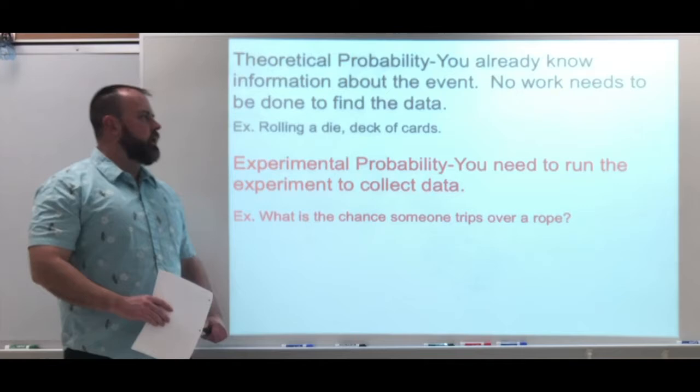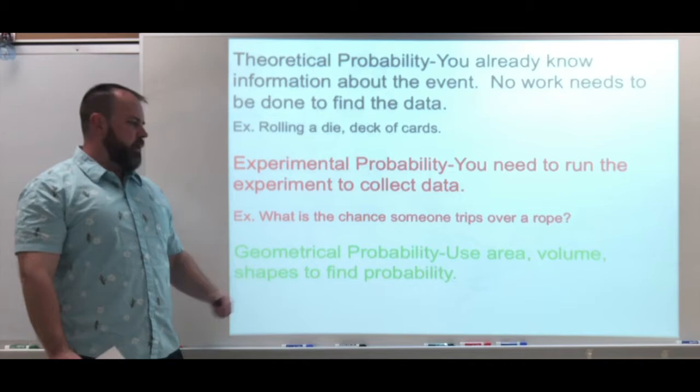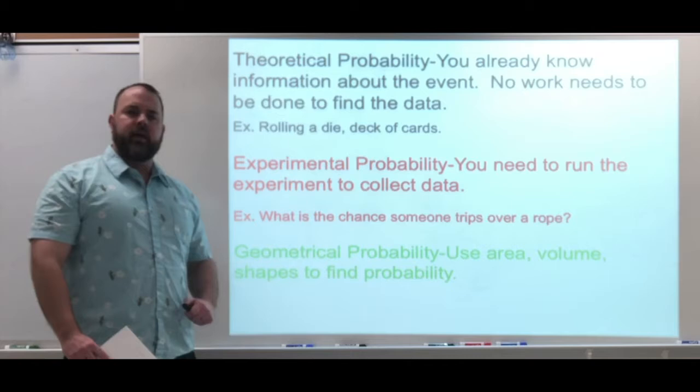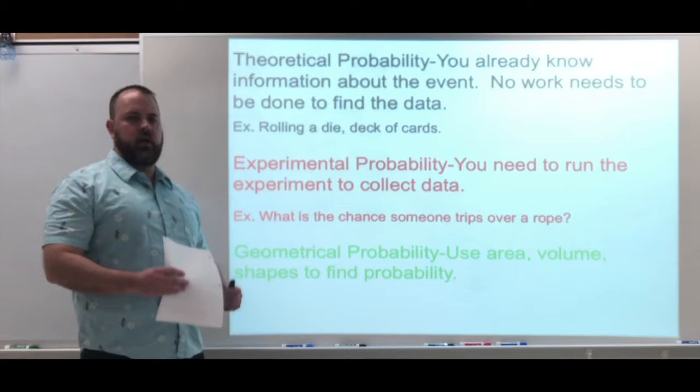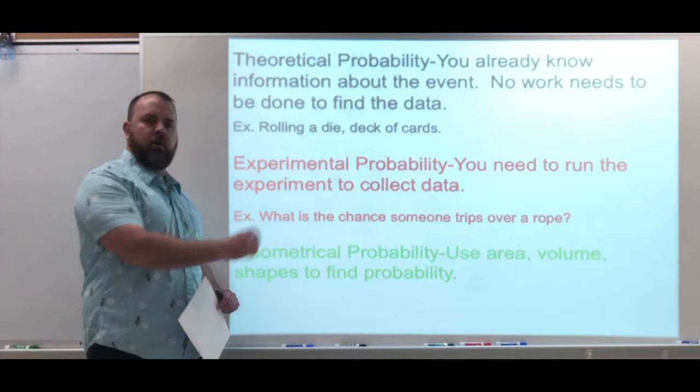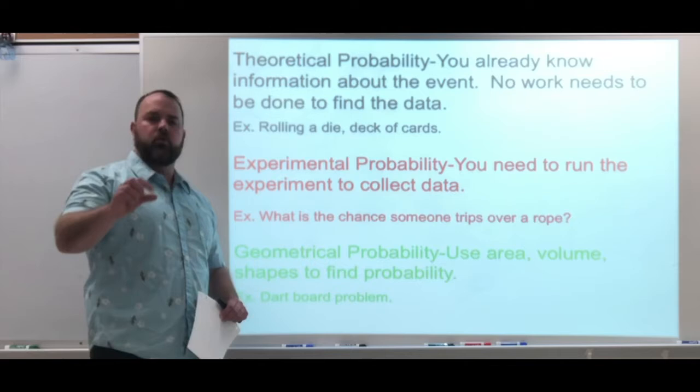The last type is geometrical probability, which uses area and volume — the geometric formulas you've learned. It's still topic over total. Here's our total area, and the topic is the chance of just part of it. A problem you've probably seen is the dartboard problem: what's the chance that you hit the bullseye, or the third ring? Those are the three types of probability.